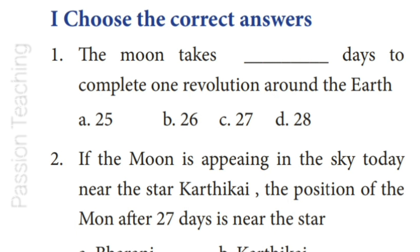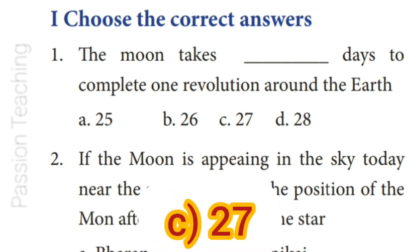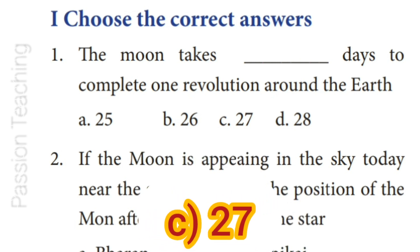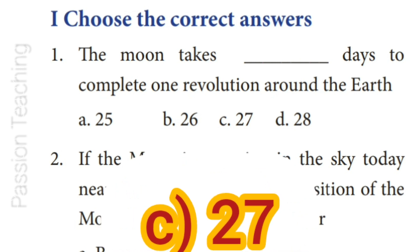Question 1: The Moon takes how many days to complete one revolution around the Earth? Options: A) 25, B) 26, C) 27, D) 28. Answer: Option C — 27. The Moon takes 27 days to complete one revolution around the Earth.